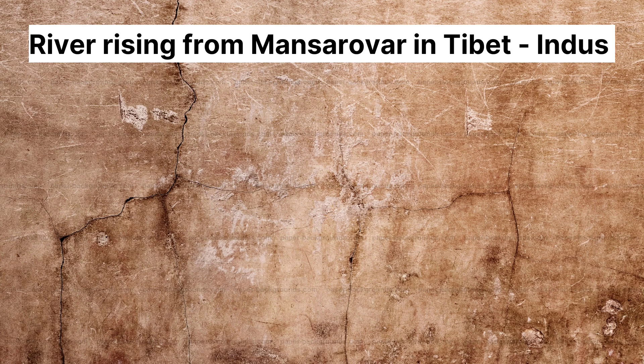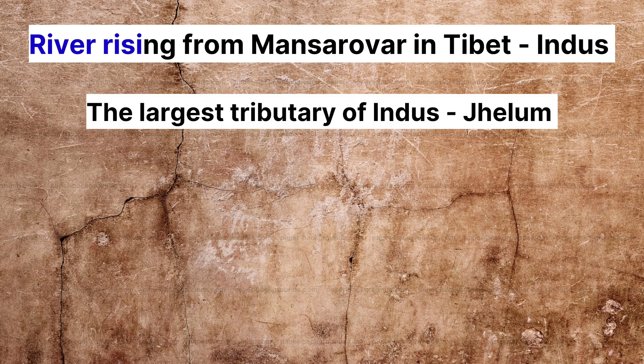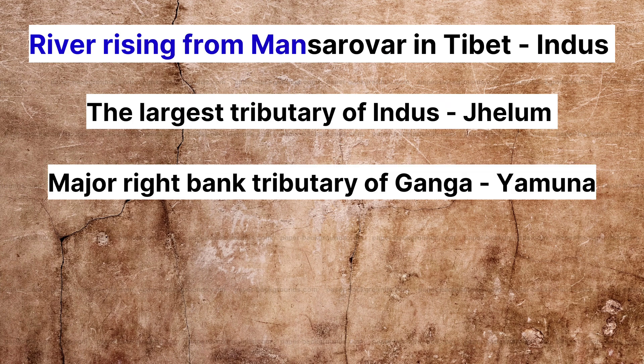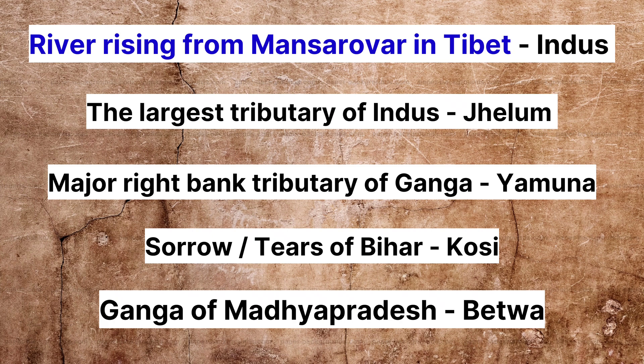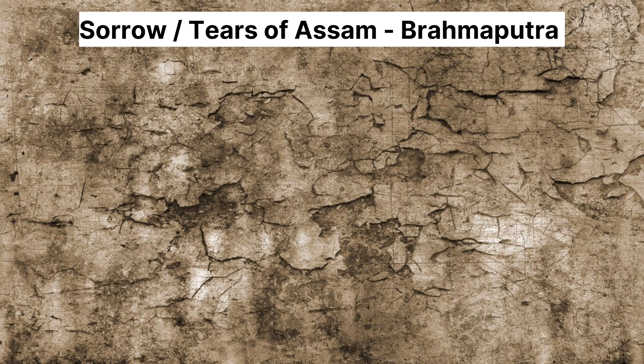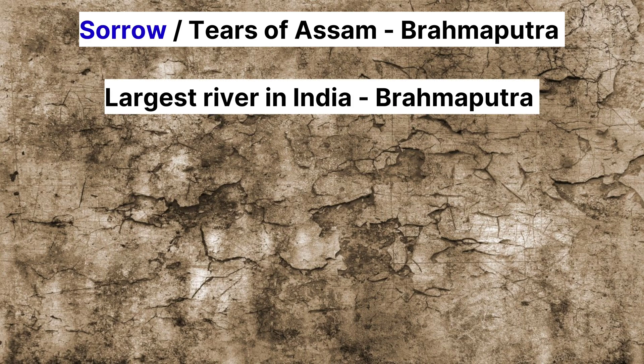The river rising from the Mansarovar Lake in Tibet is the Indus River. The largest tributary of the Indus is the Jhelum River. The major right bank tributary of the Ganga is the Yamuna River. The sorrow or tears of Bihar is the Kosi. The Ganga of Madhya Pradesh is the Betwa.